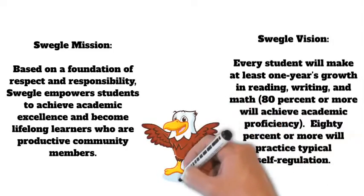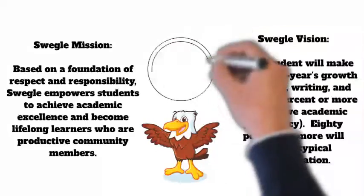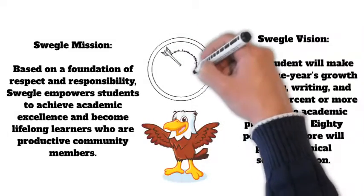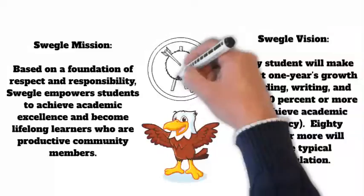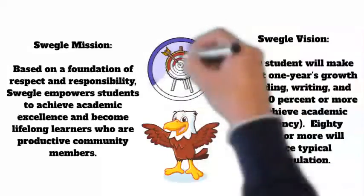Our vision states, every student will make at least one year's growth in reading, writing, and math. Eighty percent or more will achieve academic proficiency. Eighty percent or more will practice typical self-regulation.